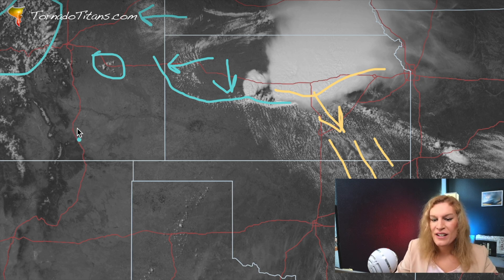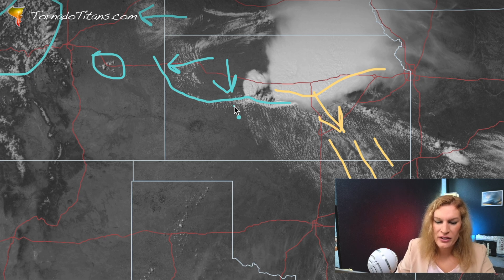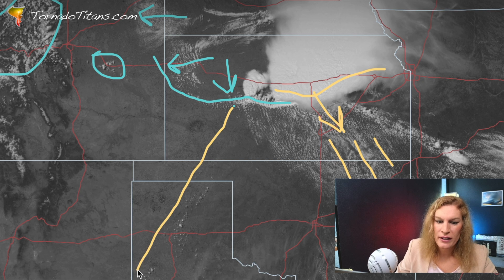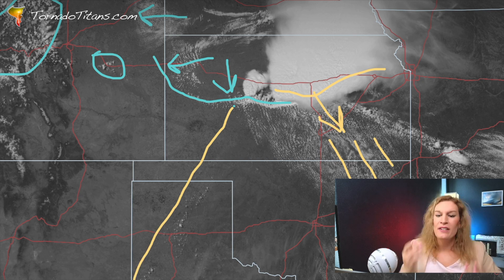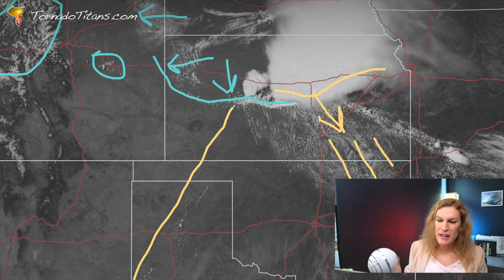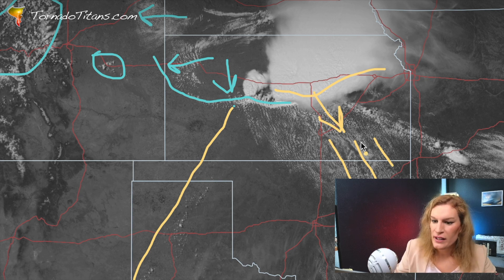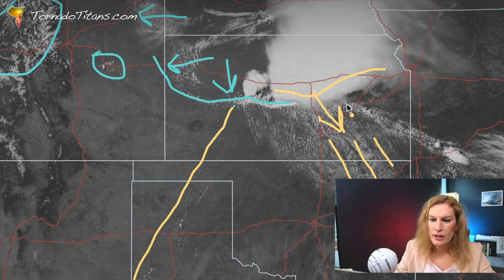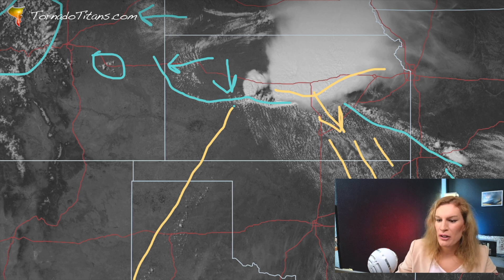Trailing down here, what you see all the time this time of year — because this is in May — you can see a trailing dry line going this way. So a couple of things you can pick up on. You've already got a basic surface pattern ongoing right here. Another thing you can see as you move through here is there is a bit of a boundary shading back this way — that's a bit of a boundary — and you can actually see a storm attempt on it.